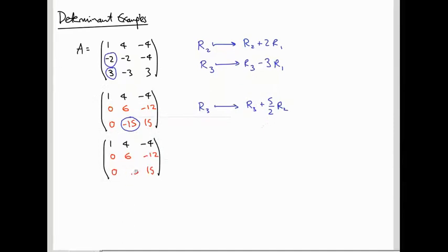So this -15 is going to become a 0. So let me just think because I'm not so quick at this -12 times 5 over 2, so 12 over 2 is 6, 6 times 5 is 30, so this is going to be 15 minus 30 that's -15.